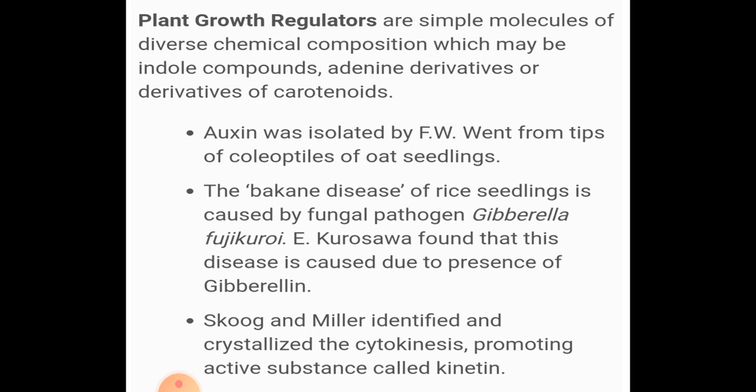Lastly, about the gaseous hormone ethylene — scientist Cousins confirmed that when a fruit ripens, a volatile gaseous substance is released from the ripened fruit. This substance hastens the ripening of stored unripe bananas, speeding up the ripening of unripe fruits. This volatile substance was identified as ethylene, the gaseous hormone.